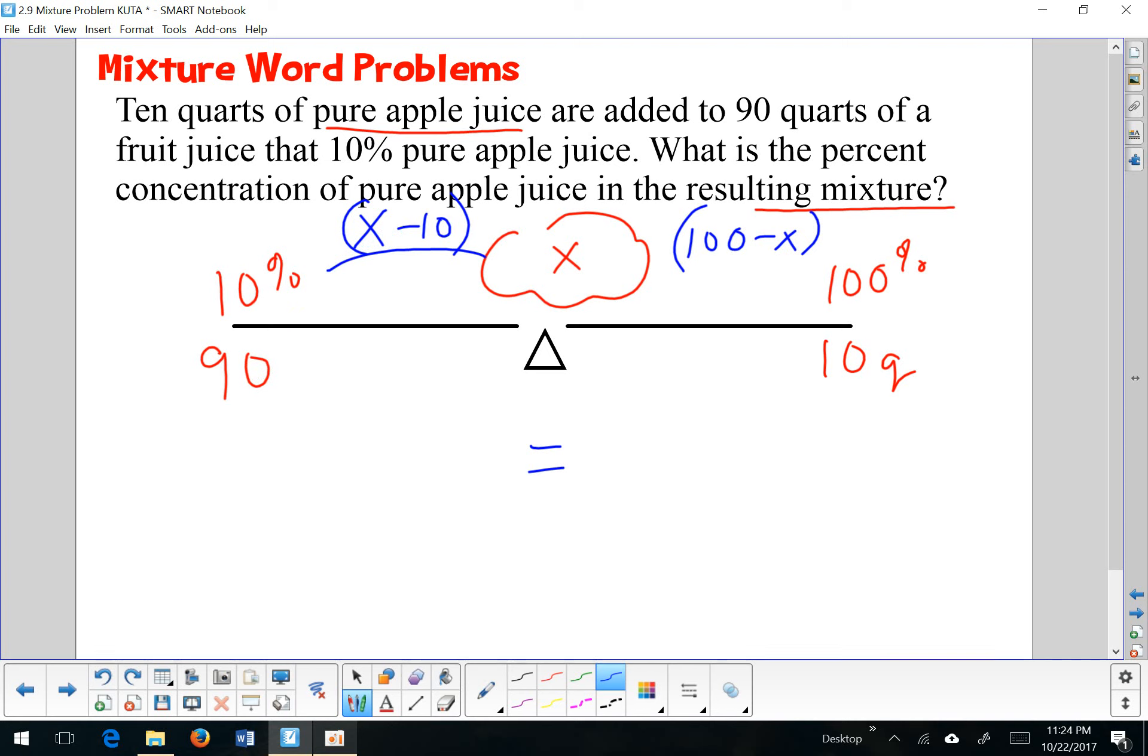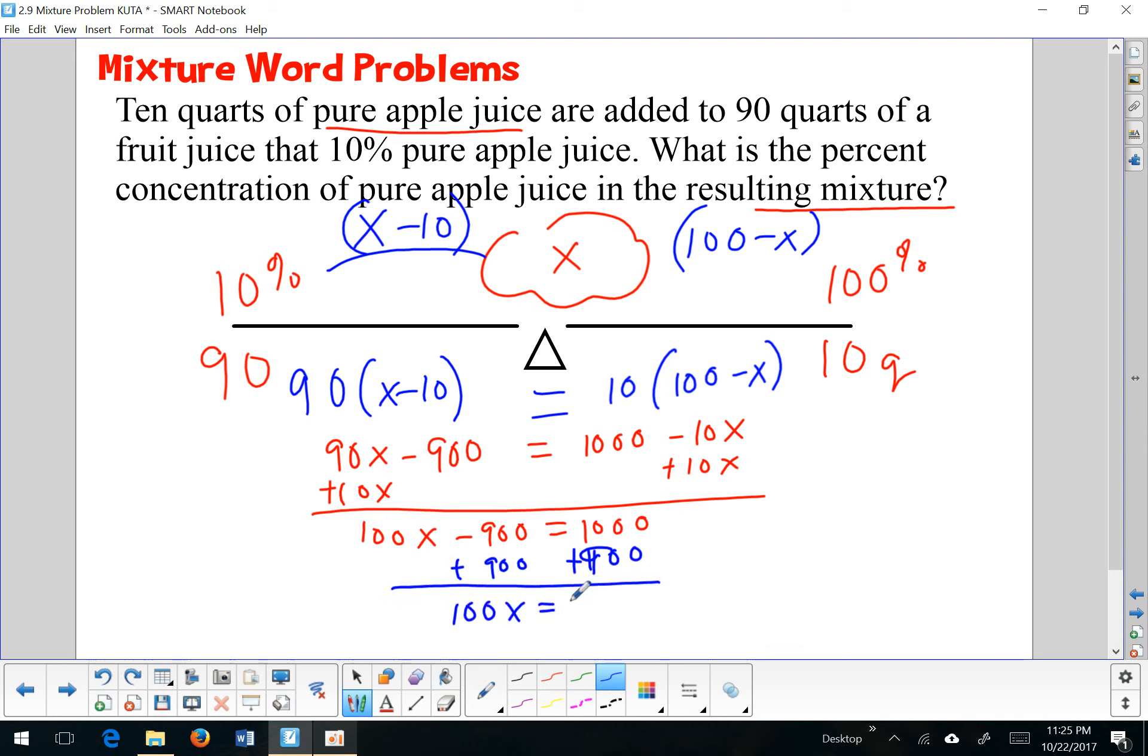So again, quantity times distance. So 90 times X minus 10 is equal to 10 times 100 minus X. So 90X minus 900 equals 1000 minus 10X. I'm going to add 10X to both sides. And that gives me 100X minus 900 equals 1000. And I'm going to add 900 to both sides. 100X is equal to 1900.